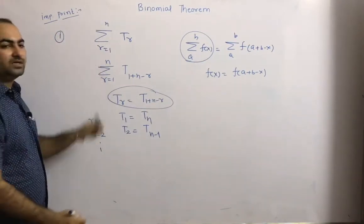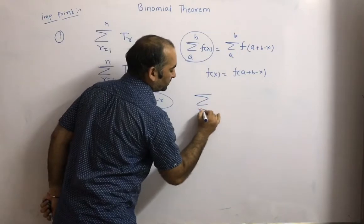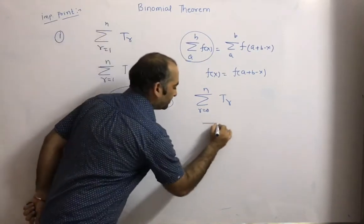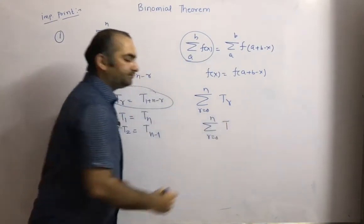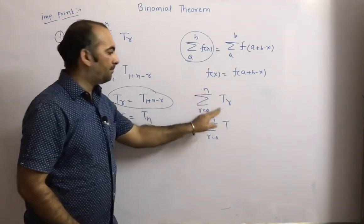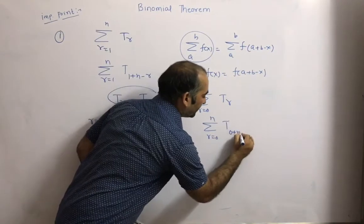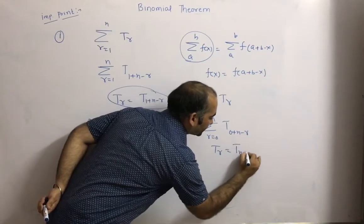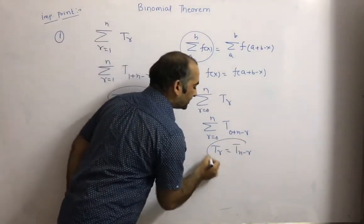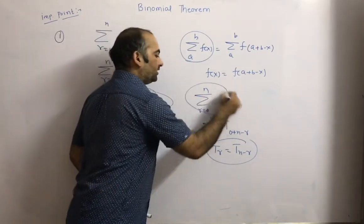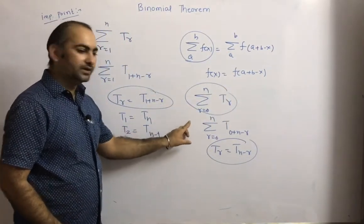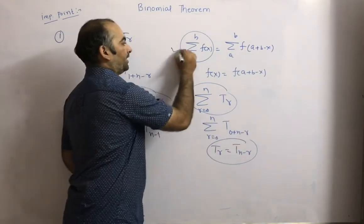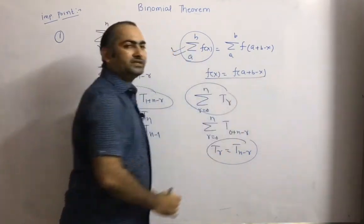If the limit is sigma r=0 to n of t_r, applying the same property gives sigma r=0 to n of t_{0+n-r} = t_{n-r}. So to check a symmetrical series, we find sigma r=0 to n of t_{n-r}, and if these two are equal, we can say the series is symmetric.